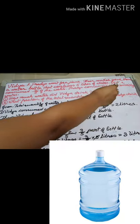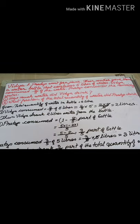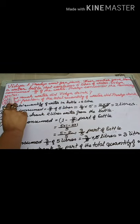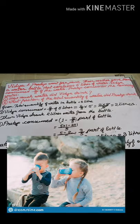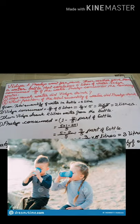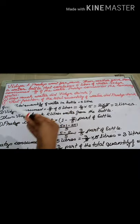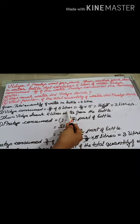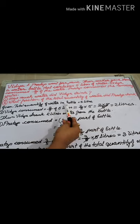From that 5 litres, Vidya consumed 2/5 of the water. The question asks how much water did Vidya drink — that means you have to find out how much Vidya consumed from the 5 litres, as it is given in fraction form. So you have to find out 2/5 of 5 litres of water.